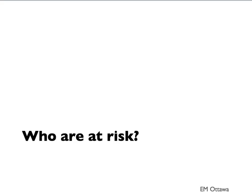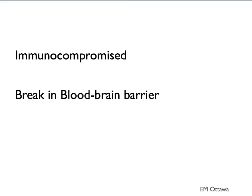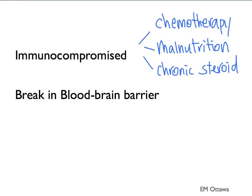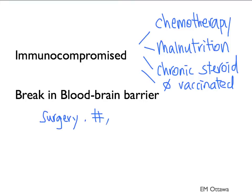In terms of at-risk populations, as with most infections, they include patients who are immunocompromised, such as those on chemotherapy, malnutrition, chronic steroid use, and those who have not been vaccinated. Another reason is if there is any break in the blood-brain barrier, making bacteria more likely to invade. This includes reasons such as surgery, trauma including basal skull fracture, or indwelling hardware such as VP shunts.